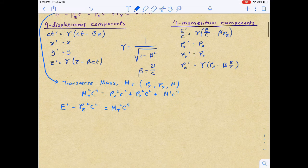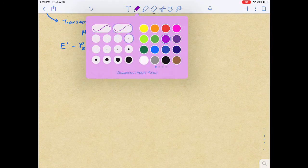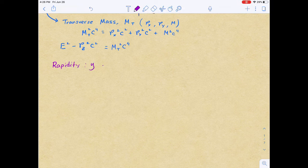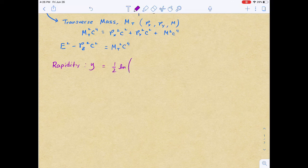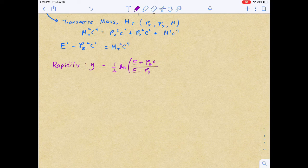Now moving on, we are going to focus on the rapidity. So the rapidity is defined as one half times the natural log of E plus pz c divided by E minus pz c.